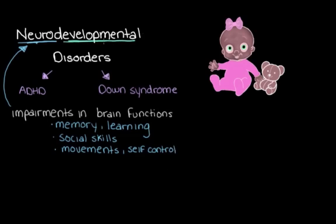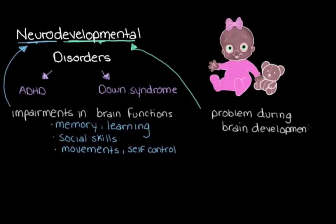We say 'developmental' here because these disorders arise when something goes wrong in the brain while it's developing, and this usually happens pretty early on — often during pregnancy or sometimes shortly after birth. So what I really want to focus on here is classifying these different neurodevelopmental disorders.